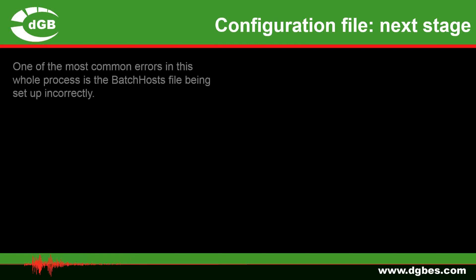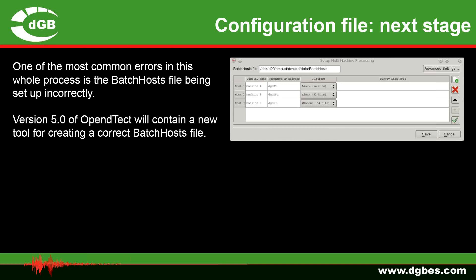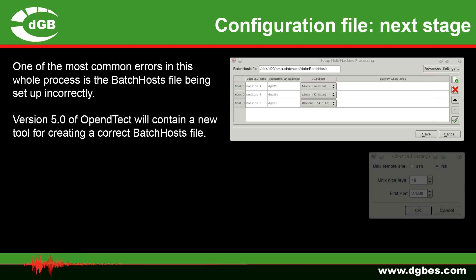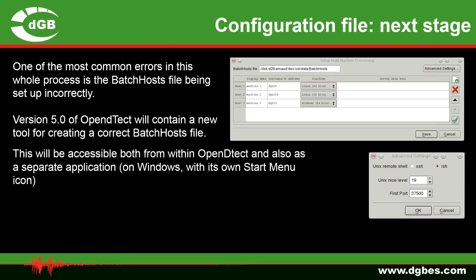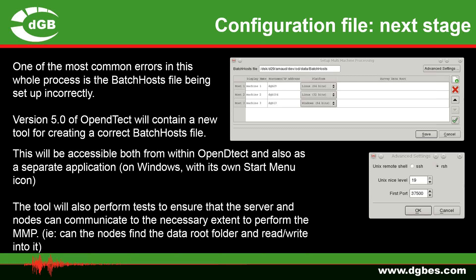Because we have many problems with the batch host file and the setting up of multi-machine processing, we have taken steps that will be implemented in version 5 — a new tool that will help in creating a correct batch host file. It's going to look something like this, where you can enter your display names, the host names and/or IP addresses, the platform and the path to the data root folder for each machine you wish to use as a node. You can set SSH or RSH, the nice level and the first port. This tool will be accessible from both within OpenDTec and also as a separate application with its own Windows start menu icon. The tool will also perform tests to ensure that the server and the nodes can communicate to the necessary extent to perform MMP — for example, can the nodes find the data root folder and read/write into it?